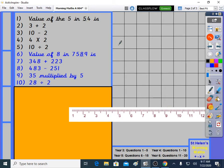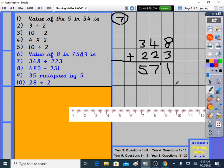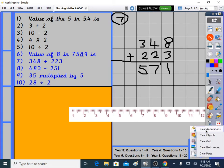We move on to question 7. 348 plus 223. If you want to be good at maths, you need to always be watching for your mistakes. 8 plus 3 is 11. 4 plus 2 is 6. Plus 1 is 7. 3 plus 2 is 5. Plus makes things bigger. That's why 348 got bigger when we added something to it. And it became 571.